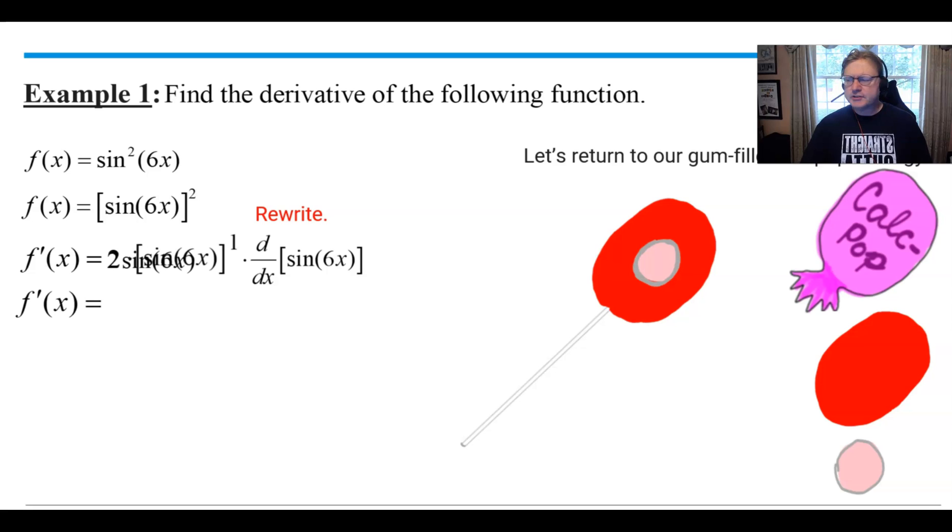Next up we're going to drop down the 2 and the sine of 6x. I don't think we really need that first power anymore. Now let's focus on the derivative of the sine of 6x. We're now at the candy-filled part of the lollipop. The derivative of the sine of 6x, well that's the derivative of the sine of something else. So the derivative of the sine of something else would be the cosine of that same something else. But you have to remember you're going to have to multiply by the derivative of that something else.